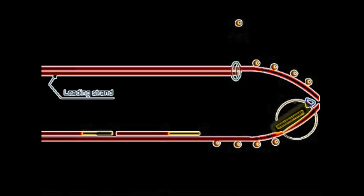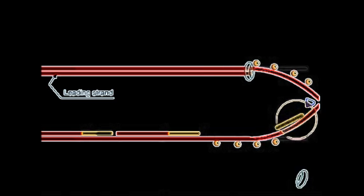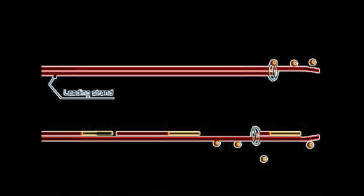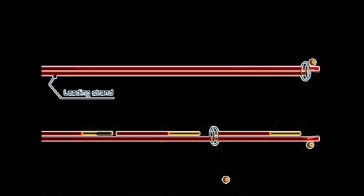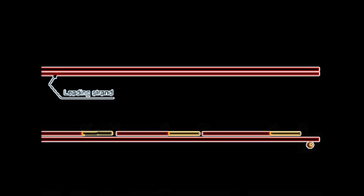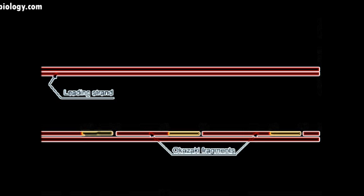Primase continues to add new primers as the bubble widens. And this process continues in the leading strand synthesis as well as the lagging strand synthesis, lagging because small fragments are generated. The fragments of DNA produced on the strand are called Okazaki fragments. Each is 1,000 to 2,000 bases long.